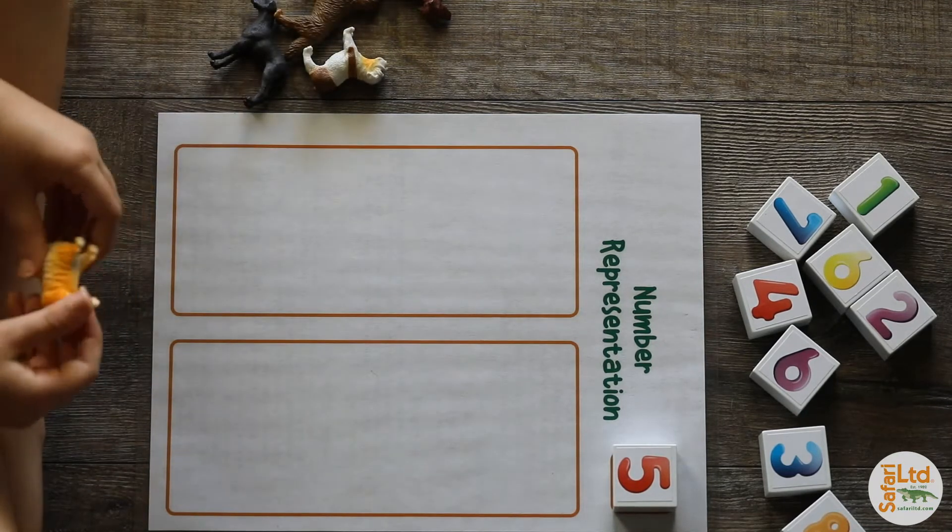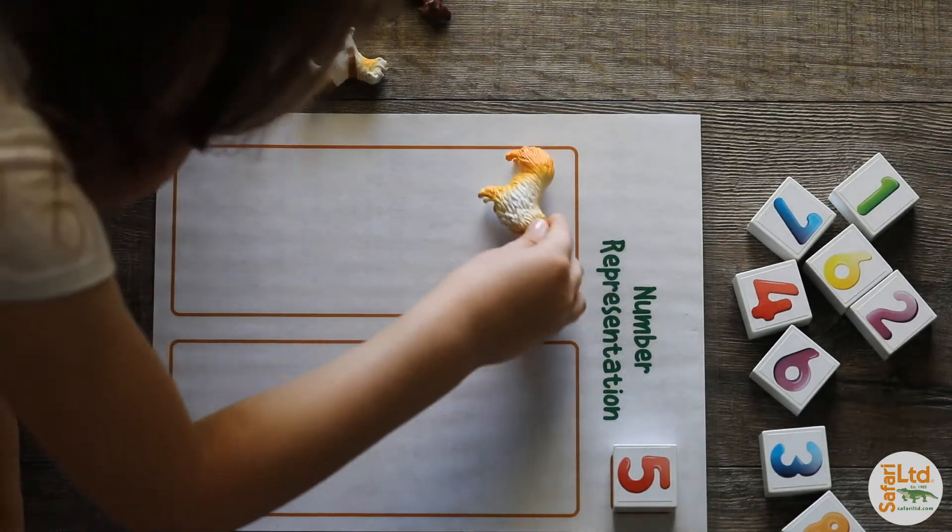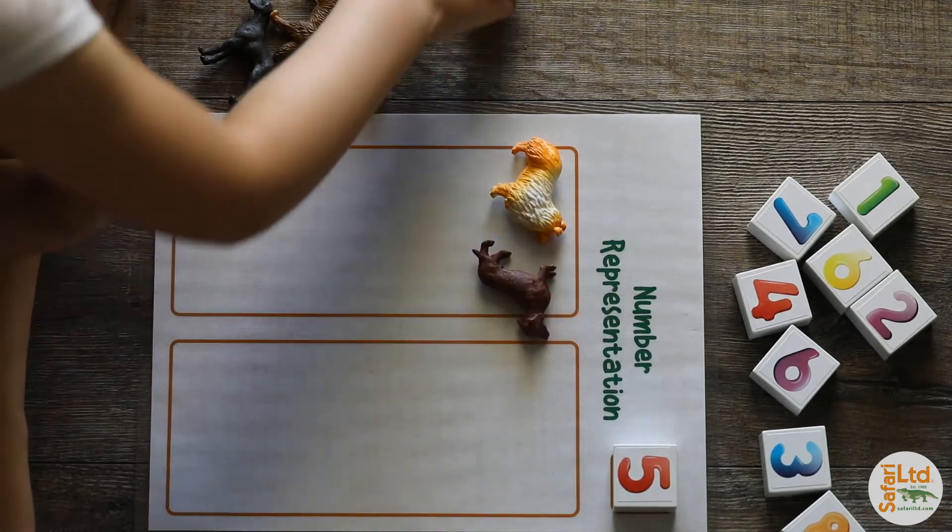She's able to see the written number five and then a visual representation of what a group of five looks like.